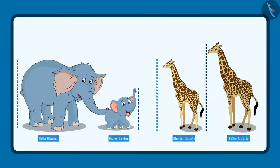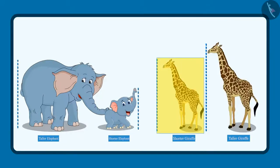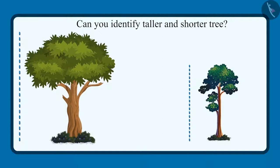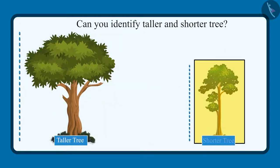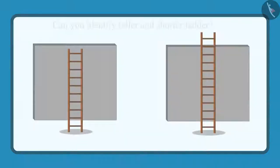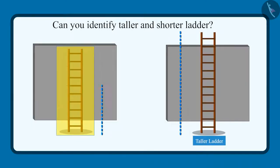So children, did you see how Chotu and Pinky identified the taller elephant, the shorter elephant, and the taller giraffe and the shorter giraffe? So can you tell me which of these two trees is taller and which one is shorter? Yes, this tree is taller and this tree is shorter. And out of these two ladders, this ladder is taller and this ladder is shorter.